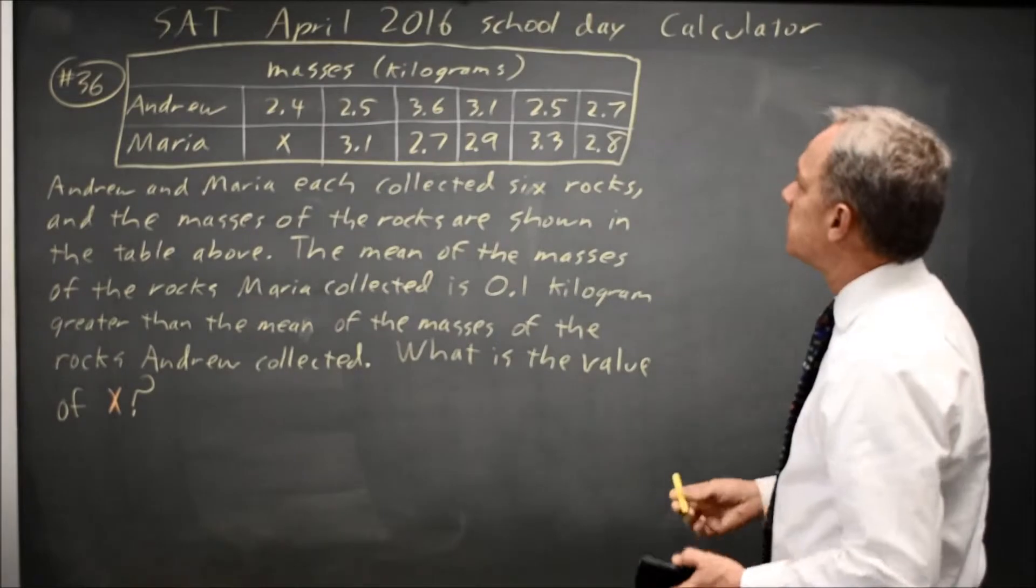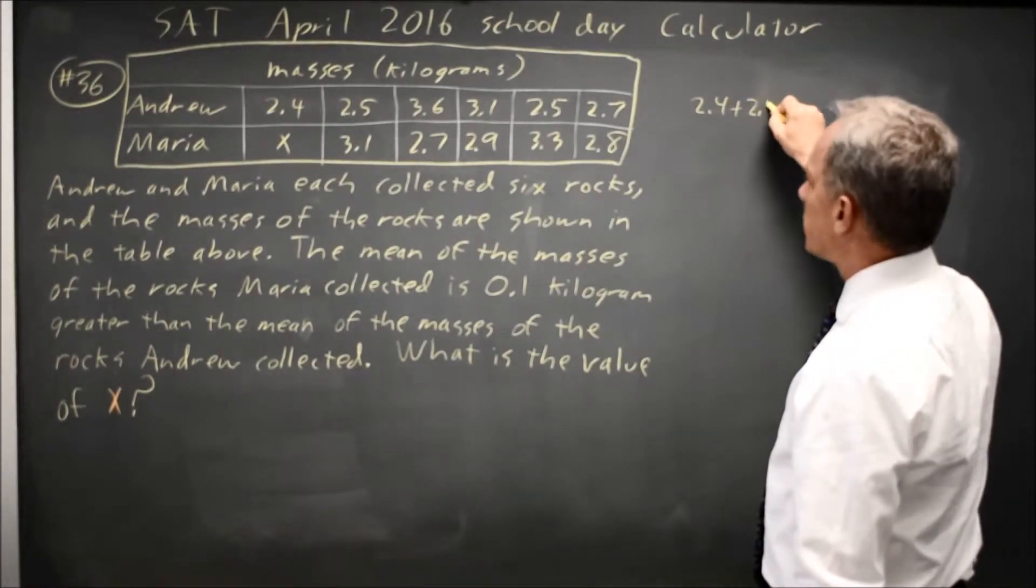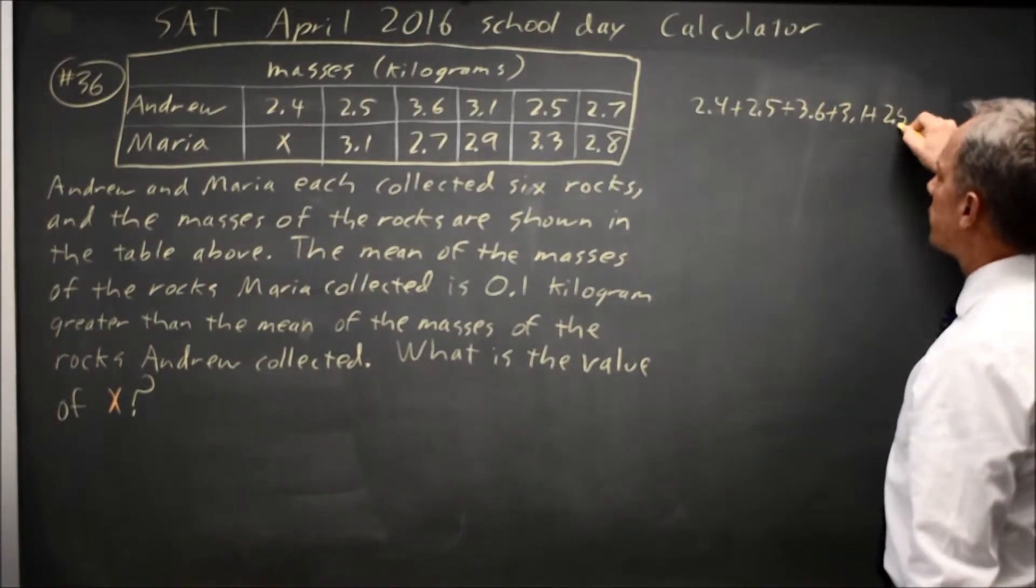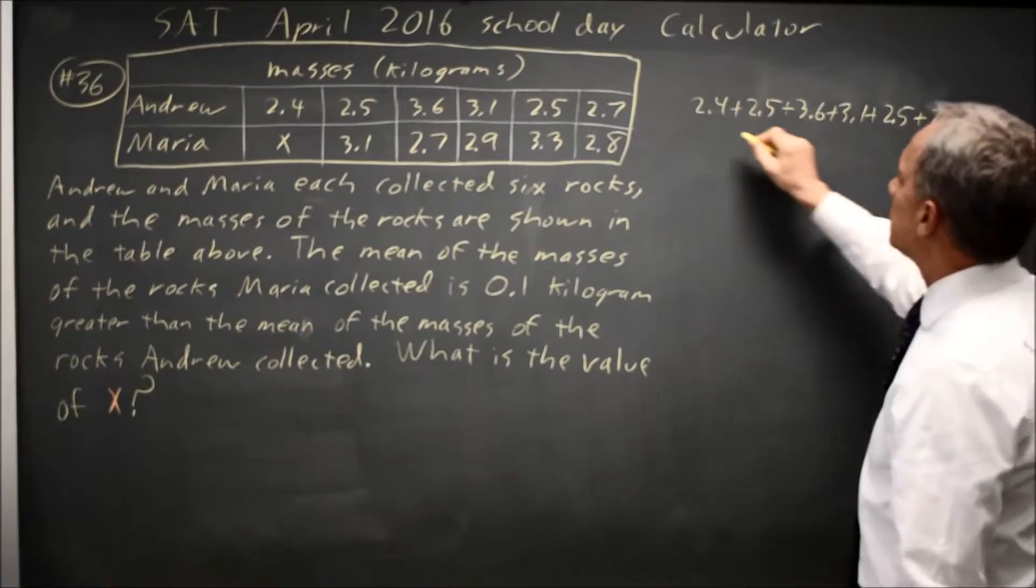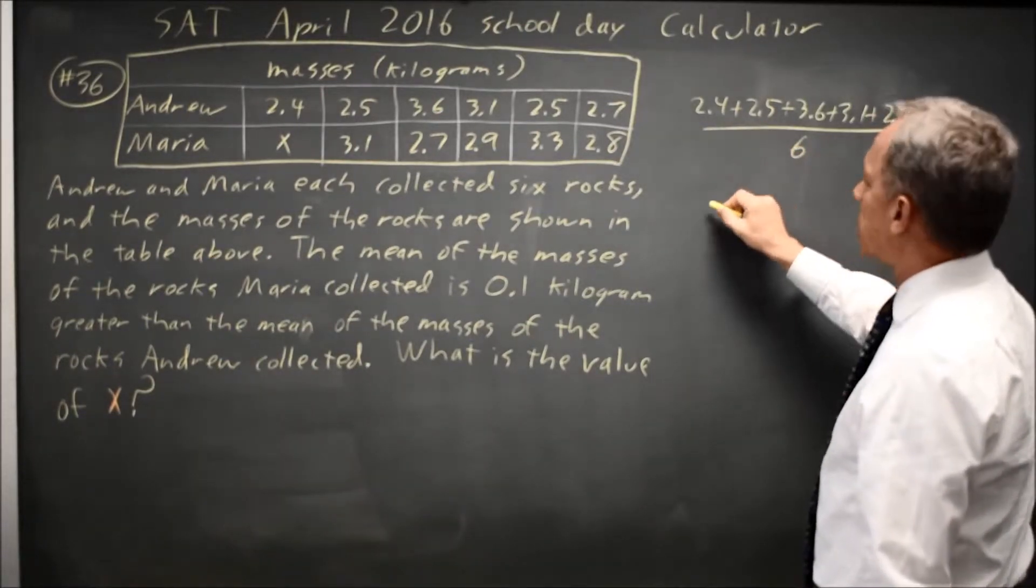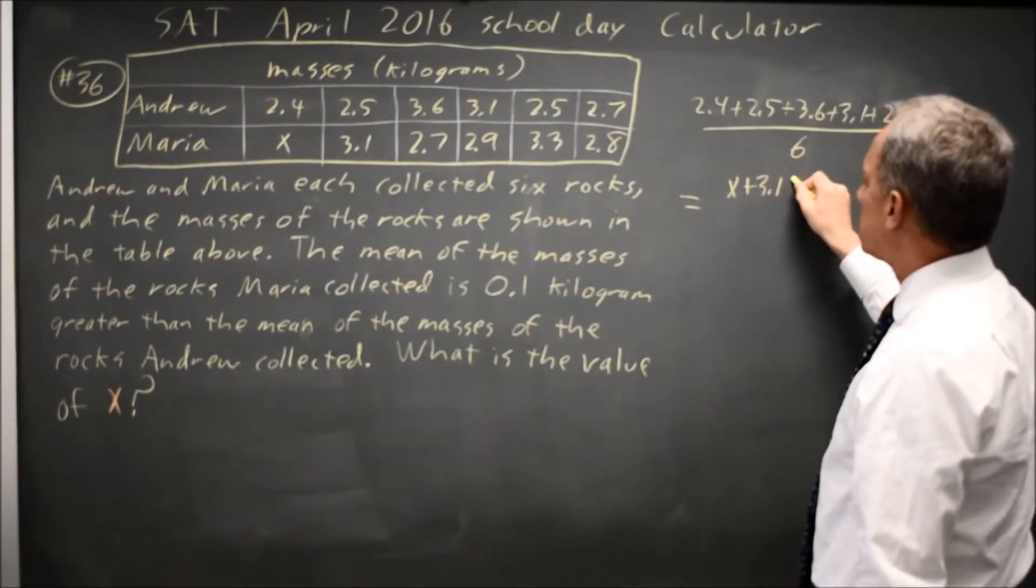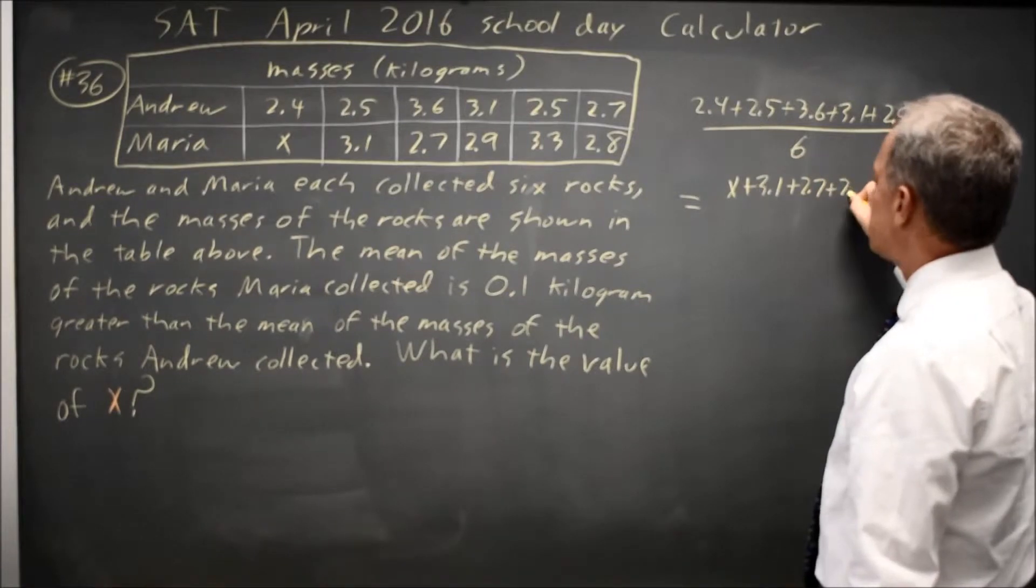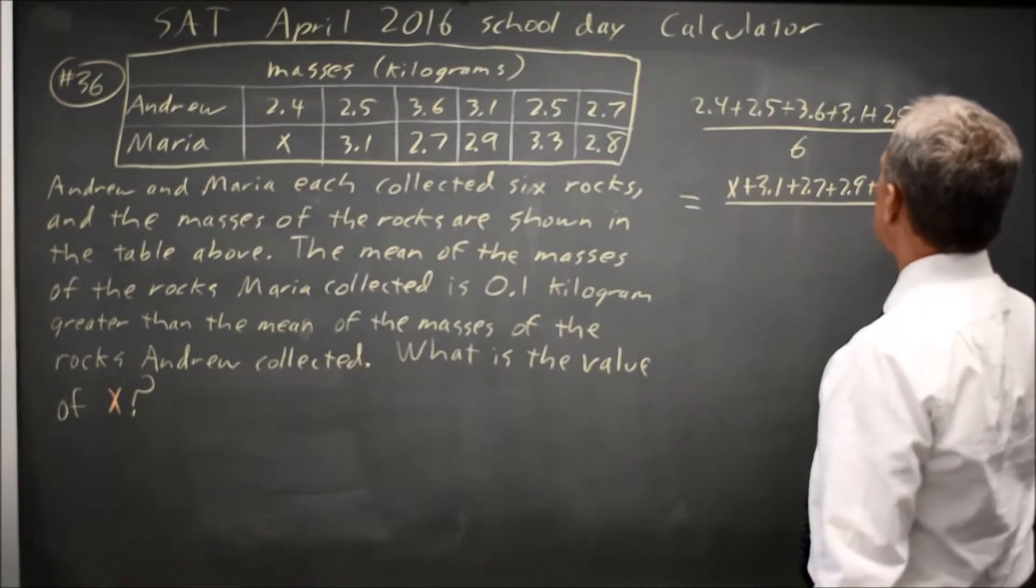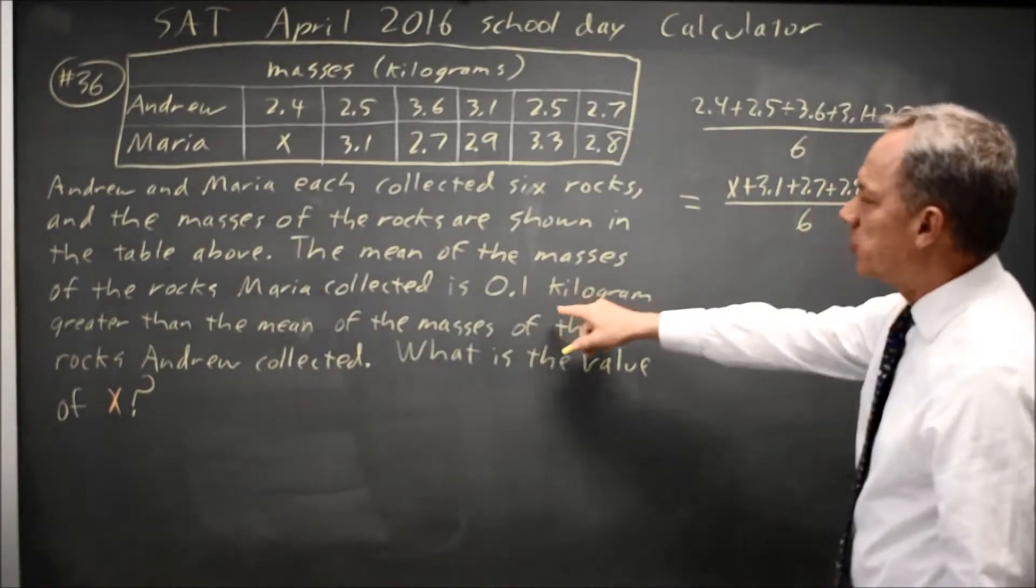So I'm going to write that as an equation. The mean for Andrew is 2.4 plus 2.5 plus 3.6 plus 3.1 plus 2.5 plus 2.7 all over 6. And that is equal to the mean for Maria: x plus 3.1 plus 2.7 plus 2.9 plus 3.3 plus 2.8 all over 6...